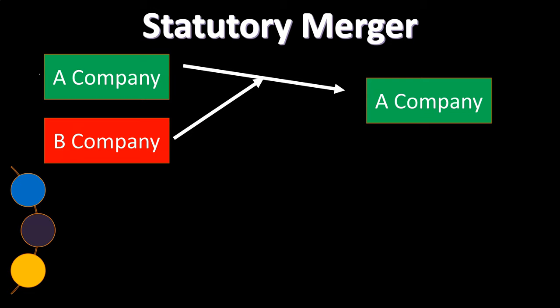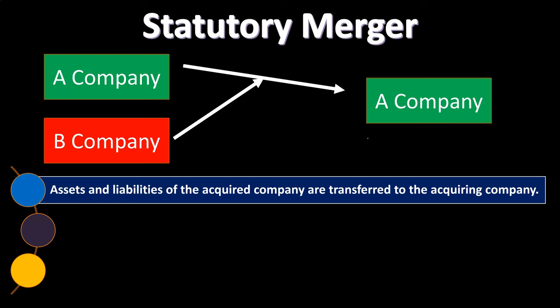In a statutory merger, one company is essentially consumed by the other. If you've got company A and company B, company A is going to be consuming company B. Therefore, the assets and liabilities of company B will result with company A. Assets and liabilities of the acquired company are transferred to the acquiring company.